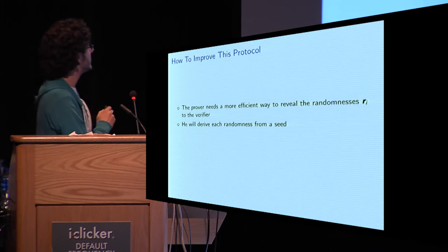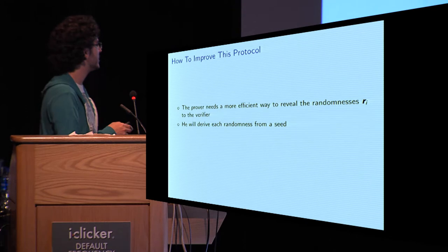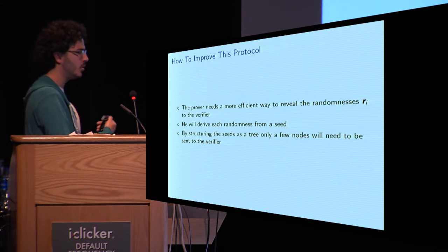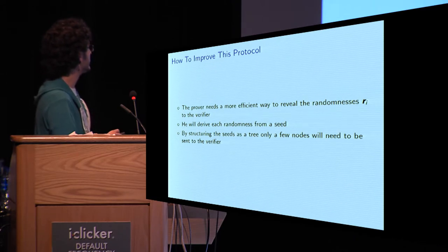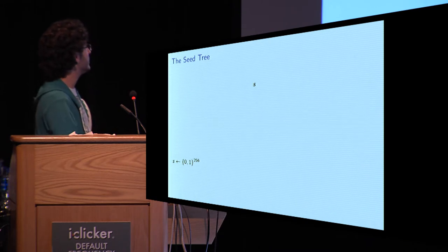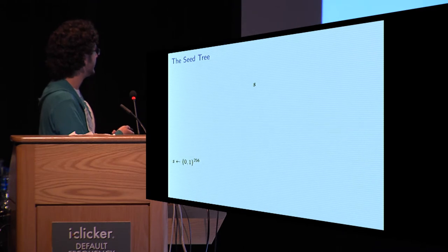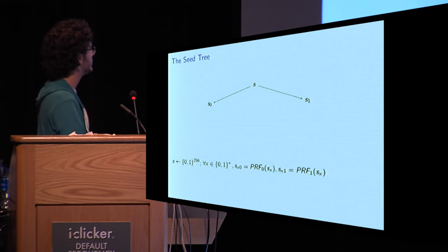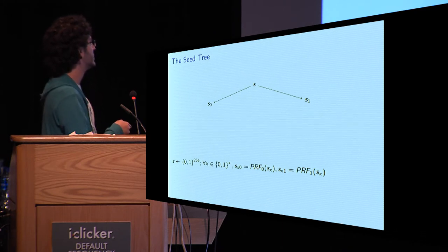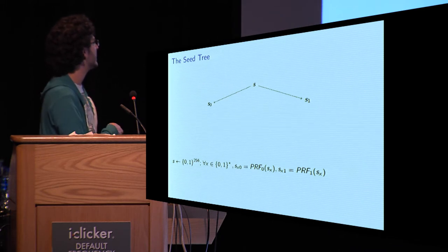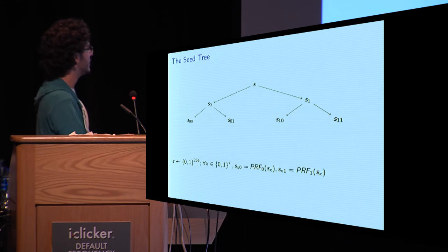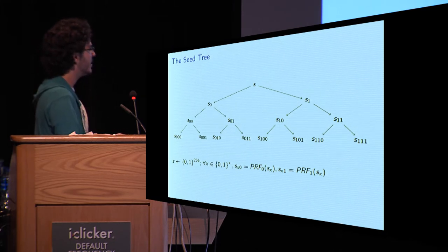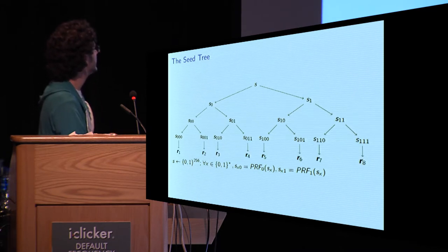The prover will first extract each randomness from a seed, simply by using a PRG. And, to do so, it will structure the seeds as a tree. This way, instead of using all the seeds, it will only need to reveal a few nodes. What will the prover do? First, it will sample one seed, uniformly at random, with 256 bits. And, use two PRFs. So, size-preserving PRFs, which we'll call PRF0 and PRF1. And, get S0, which will be the image of S using the first one, and S1, which will be the image of S using the second one. Repeat the same thing to get the next layer of seeds. And, again, until he has more seeds than needed, which will be at least three times alpha times n seeds. From this, he can use a PRG on each seed to get the corresponding randomnesses.